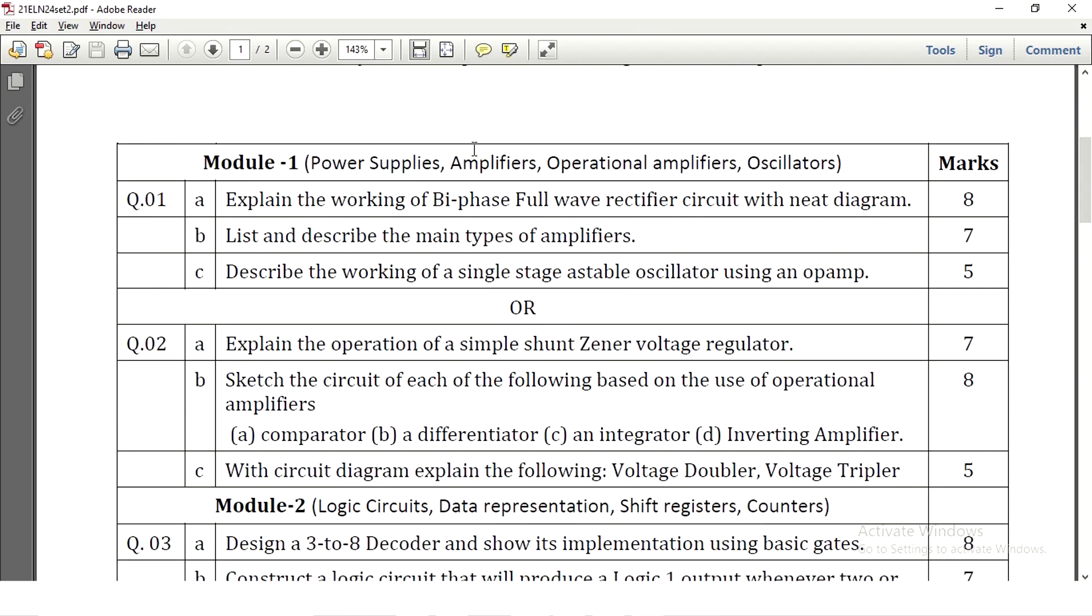In module 1 they are asking biphase full wave rectifier circuit with neat diagram for 8 marks. So biphase full wave rectifier in positive half cycle and the negative half cycle need to be written here. List and describe the main types of amplifiers. The types of amplifiers are discussed in the video, you can go through that. So different types of amplifiers are categorized, that to be written with small explanation for 7 marks. Describe the working of single stage astable oscillator. This is an important question. How the oscillations will be generated in astable oscillator with an op-amp circuit need to be explained here for 5 marks.